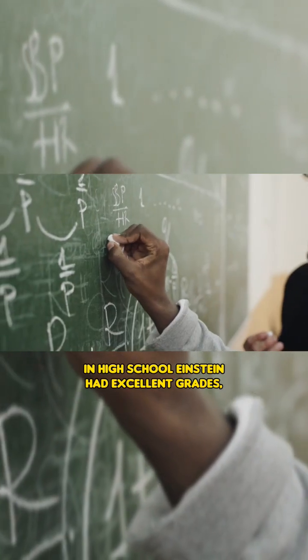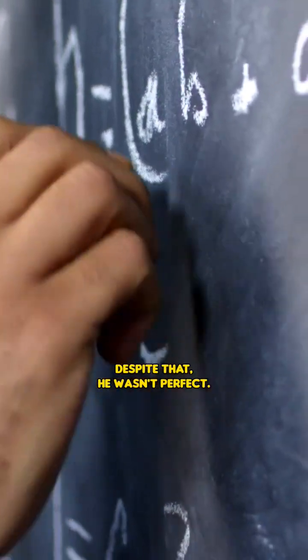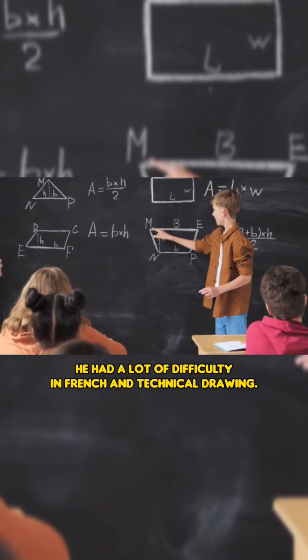In high school, Einstein had excellent grades. He had straight A's in math and physics, in addition to taking very high marks in history and geography. Despite that, he wasn't perfect. He had a lot of difficulty in French and technical drawing.